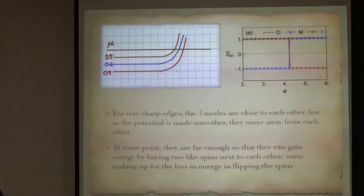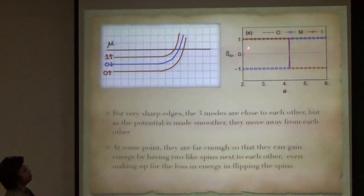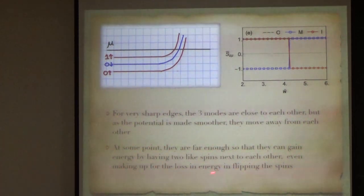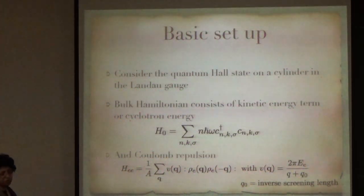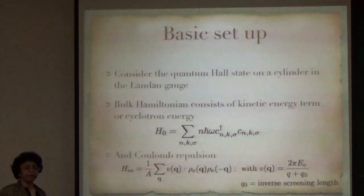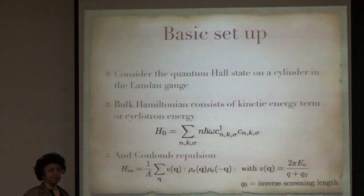But as you make the potential smoother, they move away from each other. And at some point, they are far enough apart so that they can gain energy by having two like spins close to each other. Either these two will switch, so that you have two like spins close to each other, that turns out to be the lowest energy ground state. So, this is what we mean over here, we have just the spins switching as a function of the guiding center. The rest of the talk I will try to explain a little better how one gets this spin switching and then I will also try to give some experimental scenarios where this can be measured.